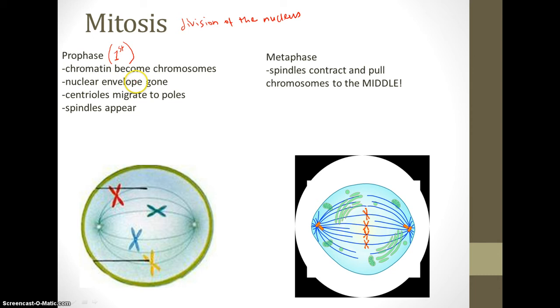What happens next is that the nuclear envelope disintegrates or disappears. Usually chromosomes are surrounded by a nuclear envelope, a covering that surrounds them. This goes away, so the nuclear envelope disintegrates.